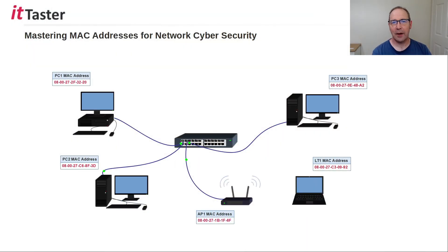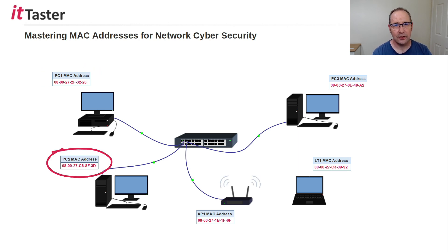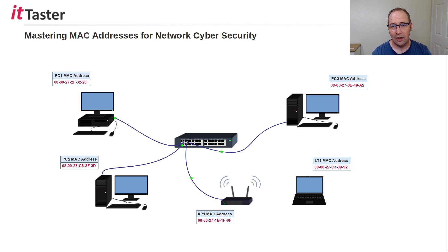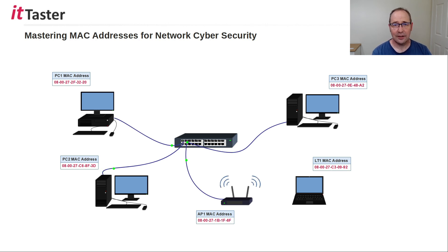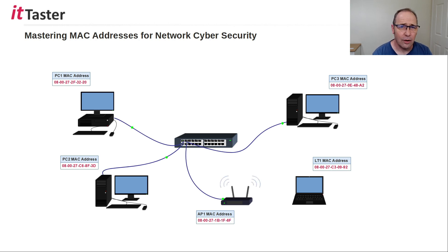All Ethernet networks use MAC addresses to communicate — that's how important they are. MAC addresses identify physical devices on an Ethernet network by their individual network interface cards, their NICs. MAC addresses are used for NIC-to-NIC communication within the same network segment. You might be thinking, what about IP addresses? They have an important role too in the communication process, and we'll talk about that later on. But getting to grips with MAC addresses first is something that will really pay off.